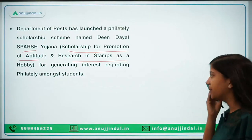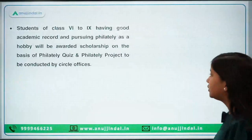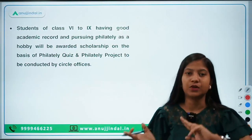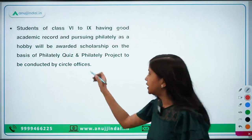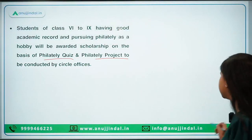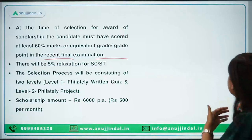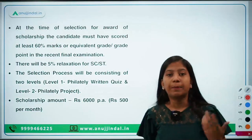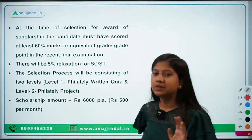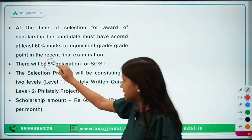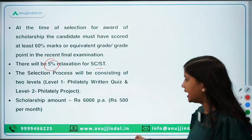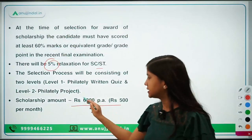There will be two levels on which students will be selected for the final prize — one is a written quiz and the other is a philately project. Philately is the study of postage stamps. Students who want to apply need to have 60% marks in the previous year's examination, with 5% relaxation for SC/ST students. The scholarship amount is 500 per month and 6000 per year.